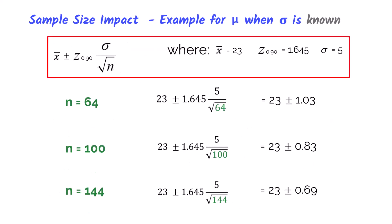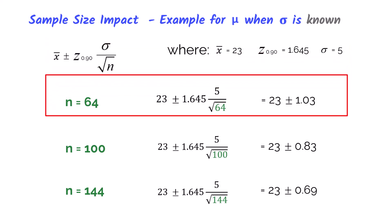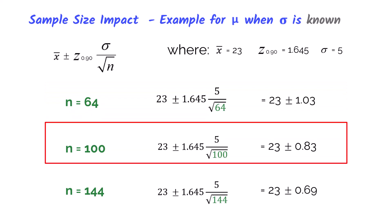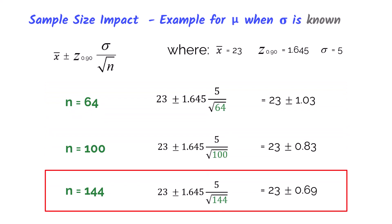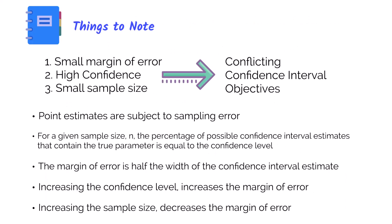What happens if we modify the sample size, keeping the sample mean of 23 hours and a 90% confidence interval with z-critical of 1.645 the same, but changing the sample size from 64 to 100 to 144? The margin of error gets smaller. Recall from the central limit theorem: the bigger the sample, the closer we get to the true population mean, and the curve becomes more narrow.